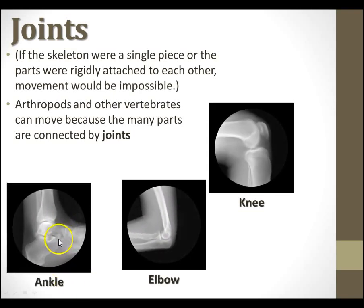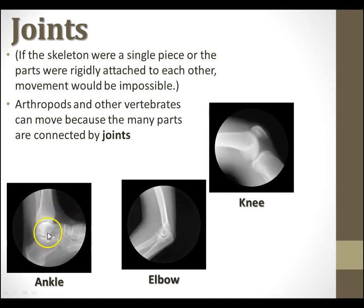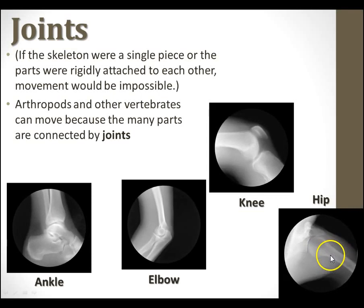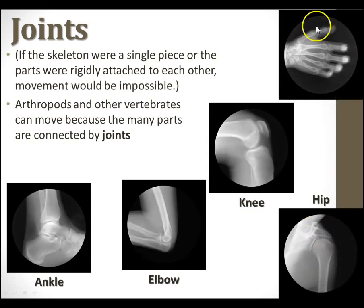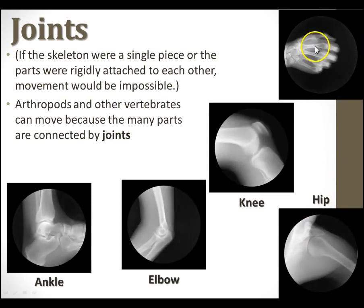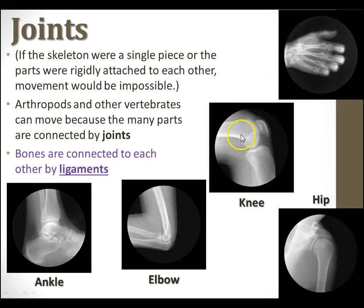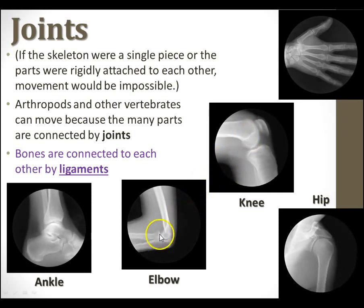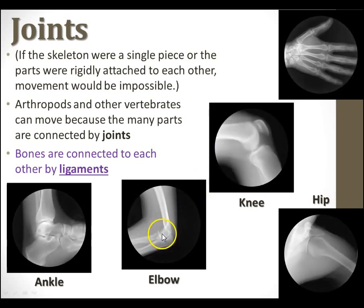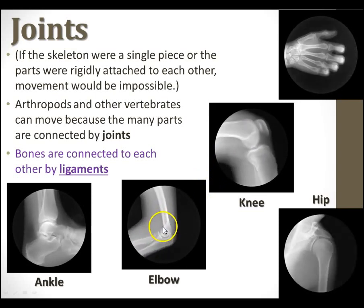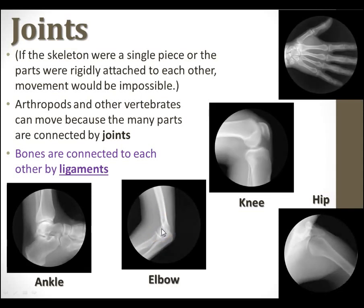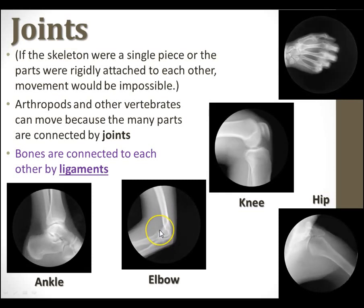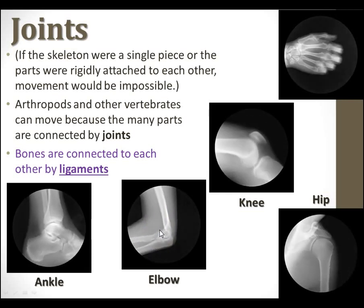Here you can see the ankle — a lot going on down there, but again, they're not rigidly attached to one another. Here's your hip — you can see it's actually twisting as it goes; it's a ball-and-socket joint. And then we have the many joints inside your hand. All these bones are going to be connected to each other by ligaments — flexible, strong structures that hold bone to bone. They don't allow for movement; they just ensure the bones are connected. The tendons are what actually connect to the muscles.